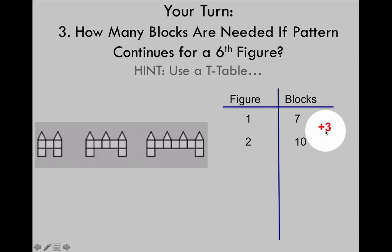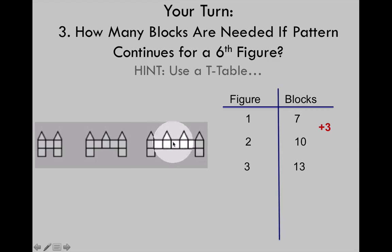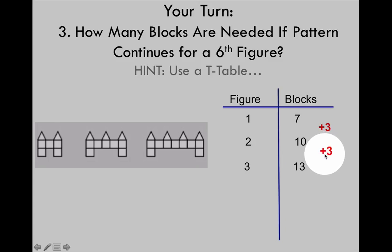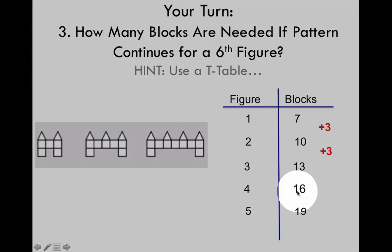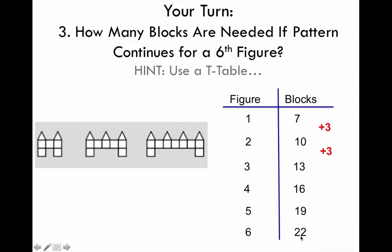Figure 2 required 10 blocks — an increase of 3. Figure 3 required 13 blocks — an increase of 3 again. So you can see your pattern rule is clearly becoming evident. Continuing the same pattern: figure 4 required 16 blocks, figure 5 requires 19 blocks, and a sixth figure requires 22 blocks. Start with 7 blocks and add 3 blocks each time.